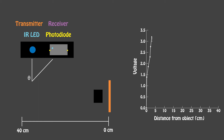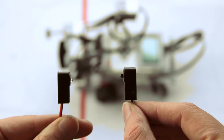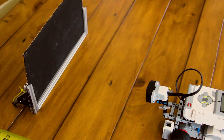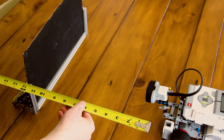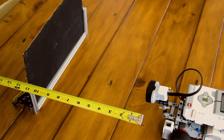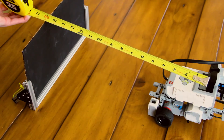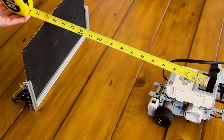IR sensors can be very non-linear. The closer it is to an object, the more difficult it is to obtain an accurate reading. You can put the sensor farther back on your robot, but remember the sensor is determining your coordinate system — make sure to take the length of your robot into account.